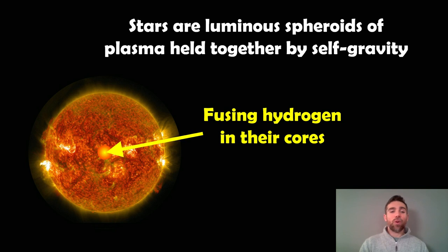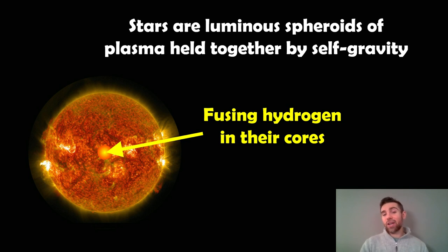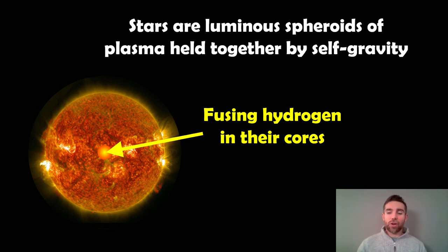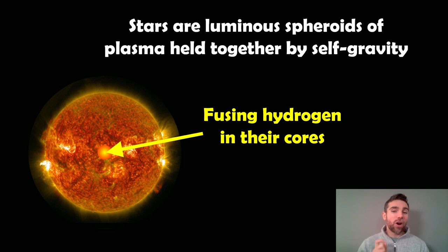Stars are basically spherical objects made of plasma held together by self-gravity. They are emitting light and they generate energy in their core by fusing hydrogen into helium. There are a few different sorts of stars depending on where they are in their evolutionary path, and they might not always be fusing hydrogen in their core. But a main sequence star — the majority of stars in the main part of their evolution — will be fusing hydrogen into helium to generate that energy.